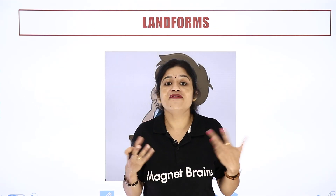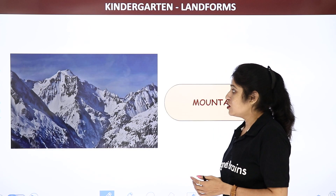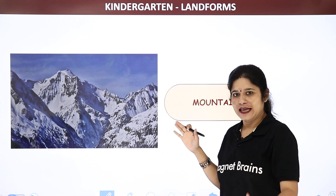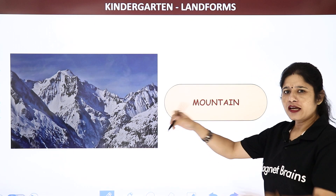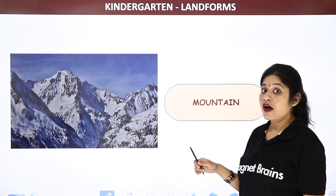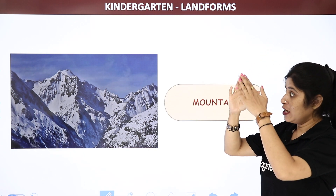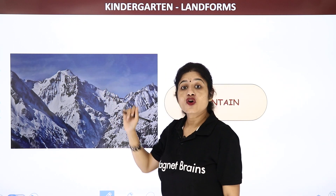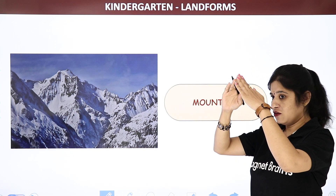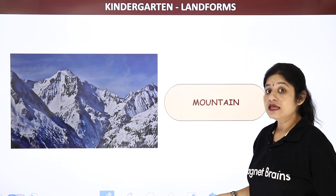So let us see what are the different types of landforms. The first one — you all know what this is. Yes, it's a mountain. The mountain is completely covered with snow. Mountains are very tall and have a peak. The top of the mountain is called the mountain peak. So the high landform is called a mountain.